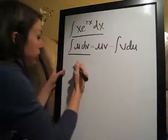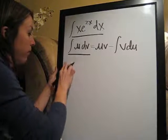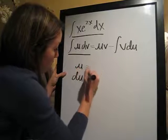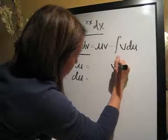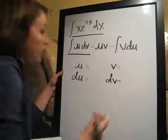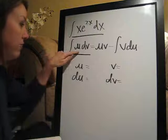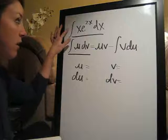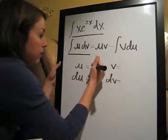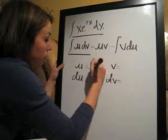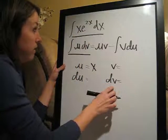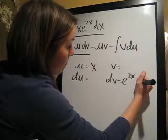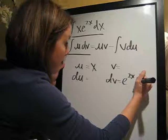So what we're going to want to do, and usually the way you want to write this, is u, du, and v, dv. We have to find u and dv in the problem. There's always going to be u and dv in our equation. So we're going to go ahead and assign u to x, and dv to e to the 2x dx.